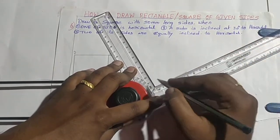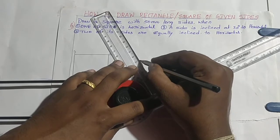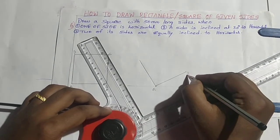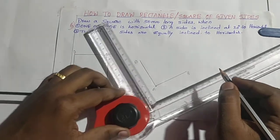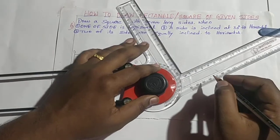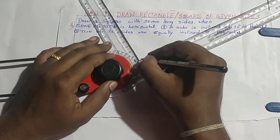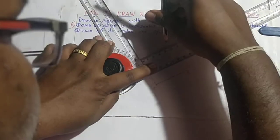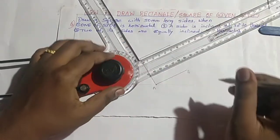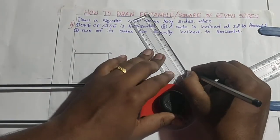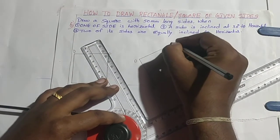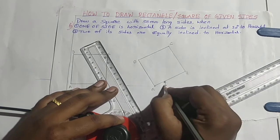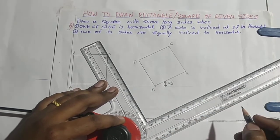Similarly on the vertical scale also, you can draw the 50 mm line. This point is B and this one is D. We need to find point C. For that, draw a horizontal line from point D with length 50 mm. Next, join B and D — that gives point C. Now one of its sides makes an angle of 30 degrees to the horizontal.